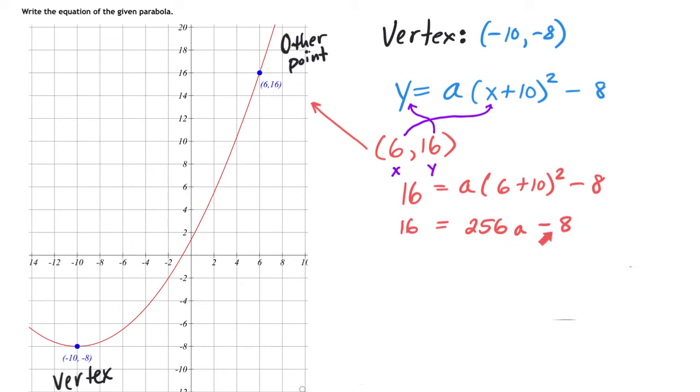We'll get rid of this minus 8 first by adding 8 to both sides. Then we're going to solve for a by getting this 256 out of here. Since it's being multiplied, we'll divide both sides by 256.